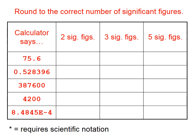What would you write down for each of those answers? So, in this box right here, we need to take 75.6 and round it to two significant figures. That's going to be 76.